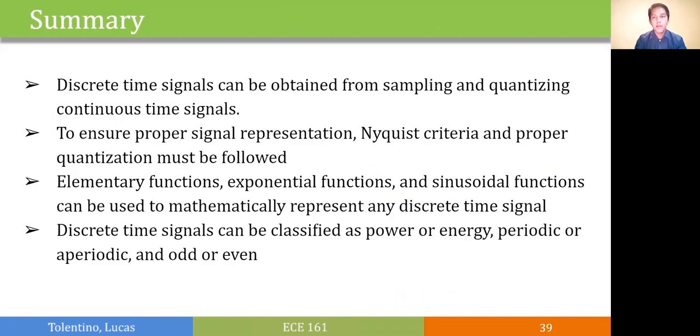In summary, we've learned that discrete time signals can be obtained from sampling and quantizing continuous time signals. To ensure proper signal representation, we should follow the Nyquist criteria and use proper quantization to minimize quantization errors. We also learned that we can represent signals using elementary functions, exponential functions, and sinusoidal functions. And last but not least, you can now classify signals either as power or energy signals, as periodic or aperiodic signals, and also based on symmetry if it's odd or even.